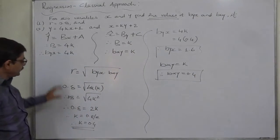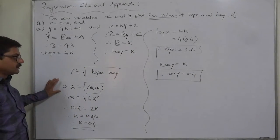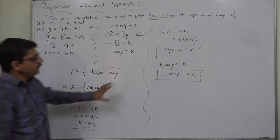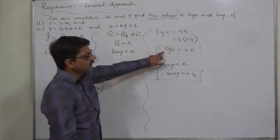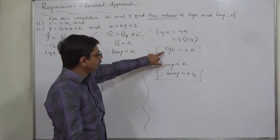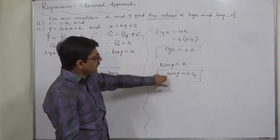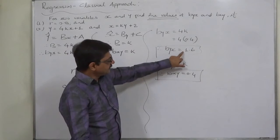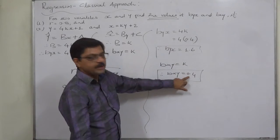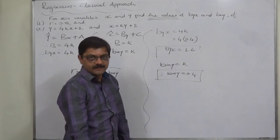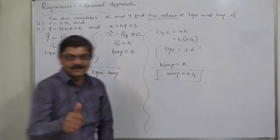Thus, with the help of the coefficient of correlation, we now have the numerical values of byx and bxy: 1.6 and 0.4 respectively. That's it, thank you very much.